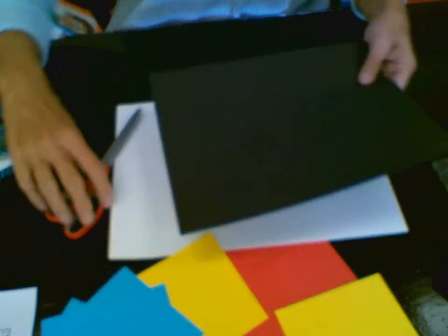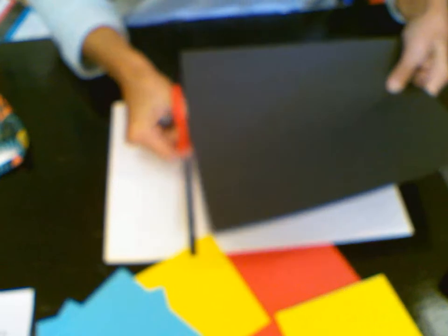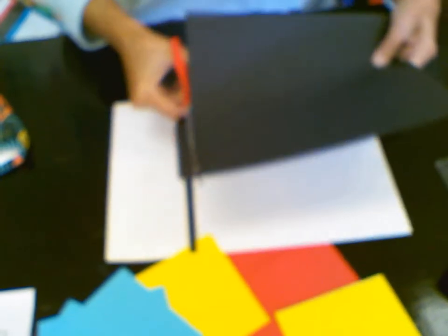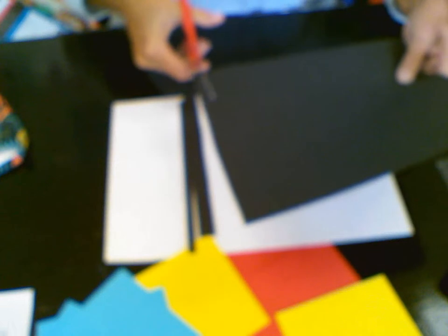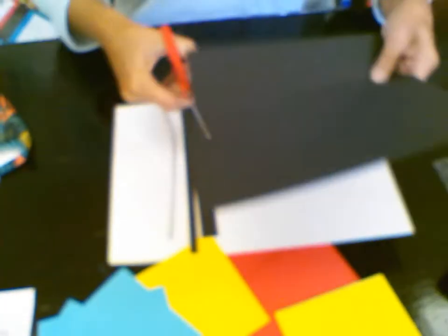So using our scissors, we are simply going to create different sizes of black strips: thin, thick, skinny, fat, all different types. You want some short, some long, some medium, and some thin.